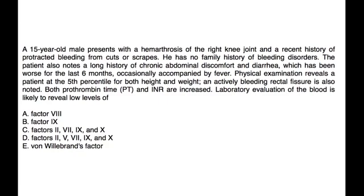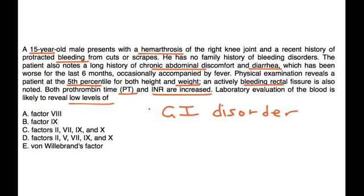A 15-year-old male presents with hemarthrosis of the right knee joint and a recent history of protracted bleeding from cuts or scrapes. He has no family history of bleeding disorders. The patient also notes a long history of chronic abdominal discomfort and diarrhea, which has been worse for the last six months, occasionally accompanied by fever. Physical exam reveals the patient at the fifth percentile for both height and weight. An actively bleeding rectal fissure is also noted. PT and INR are increased. Lab evaluation of the blood is likely to reveal low levels of what? This patient is a teenager with an obvious GI disorder — he has diarrhea and abdominal discomfort, and he is very low for his age with regard to weight, so he is not gaining weight like he should.